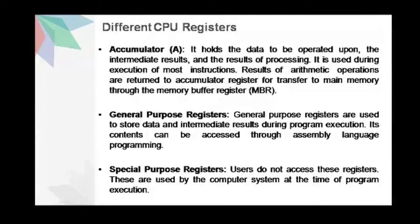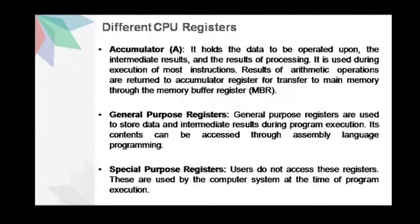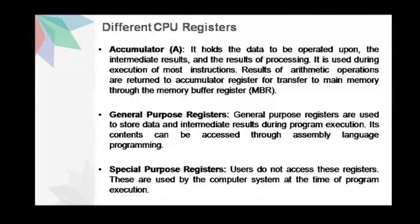Next, we have general purpose registers. These registers are used to store data and intermediate results during program execution. The contents can be accessed using assembly language programming. Next, we have special purpose registers. Users do not access these registers; they are used by the computer system at the time of program execution. Some examples of special purpose registers are memory address registers and instruction registers.